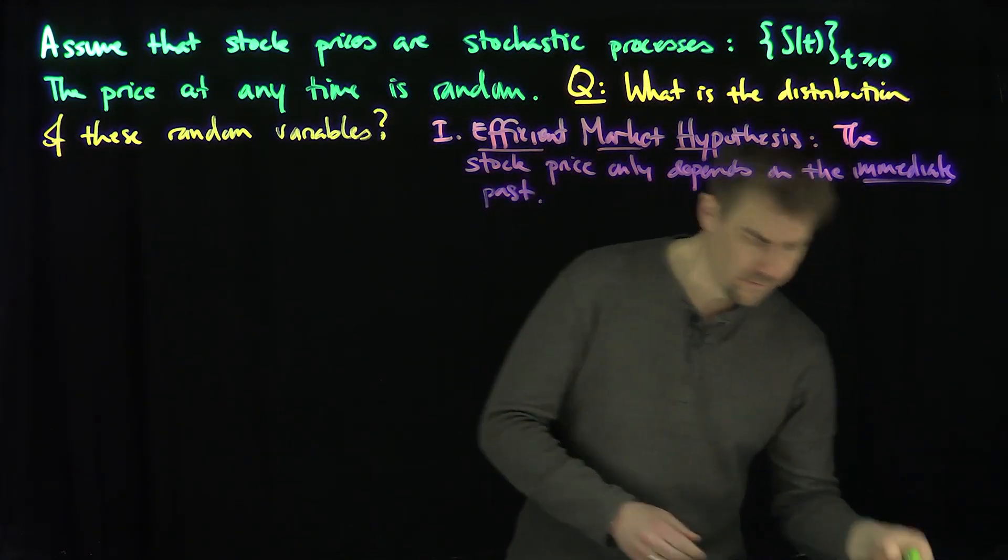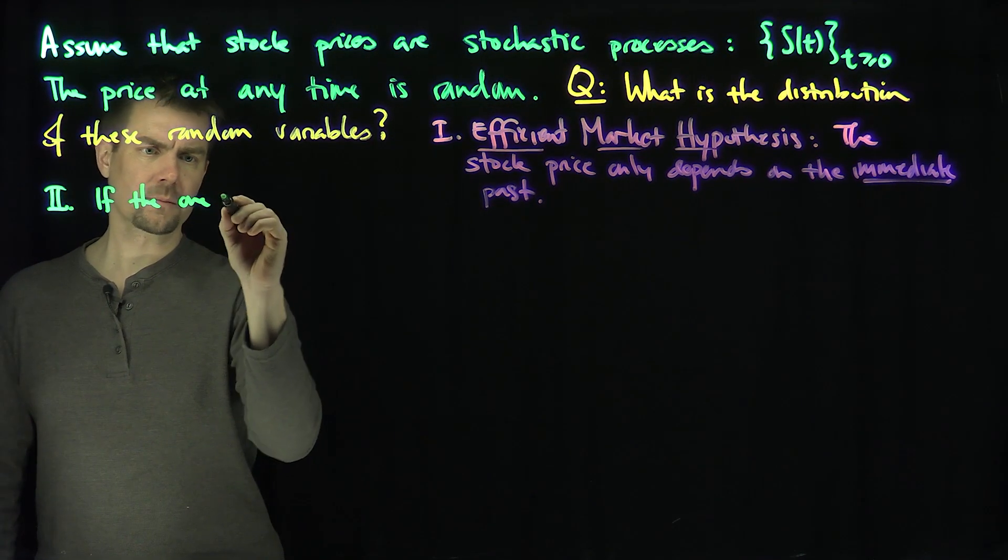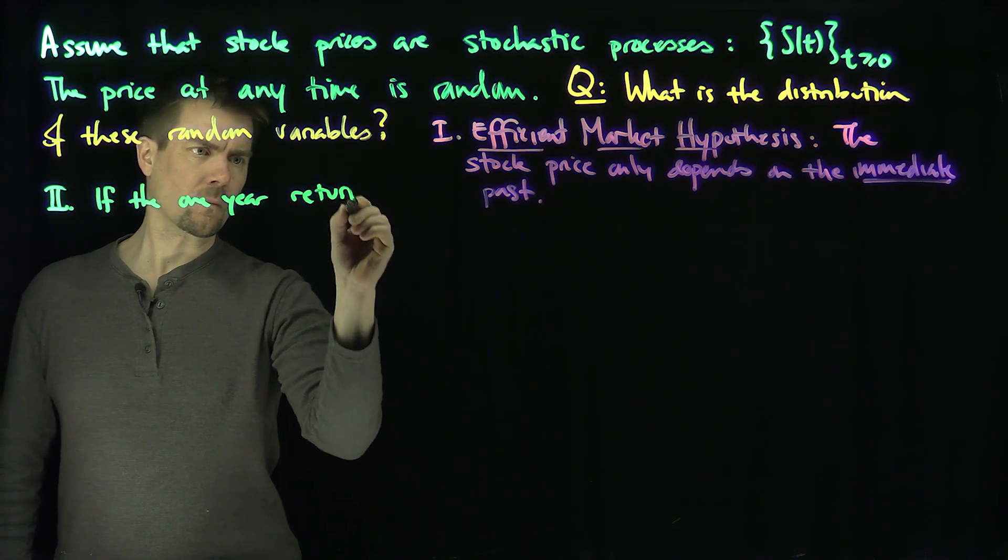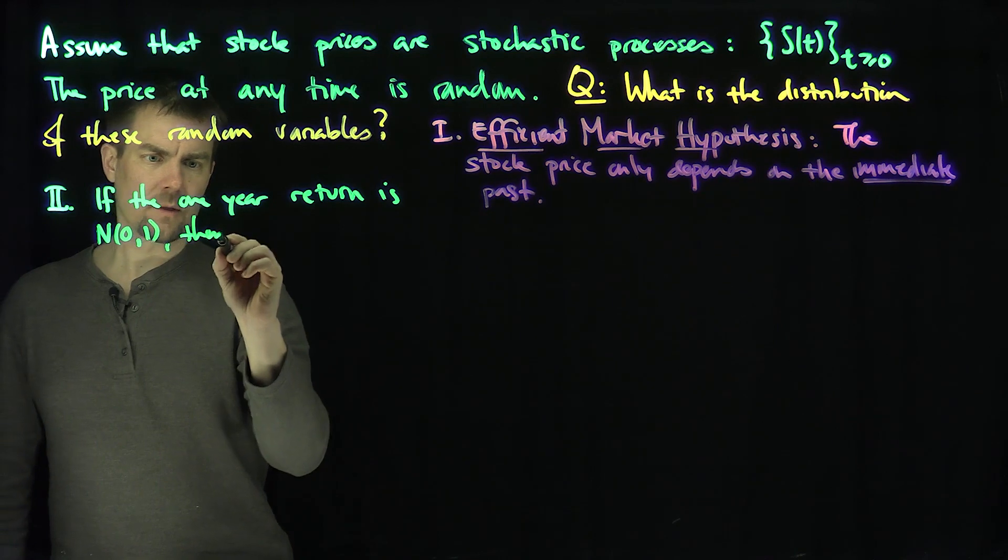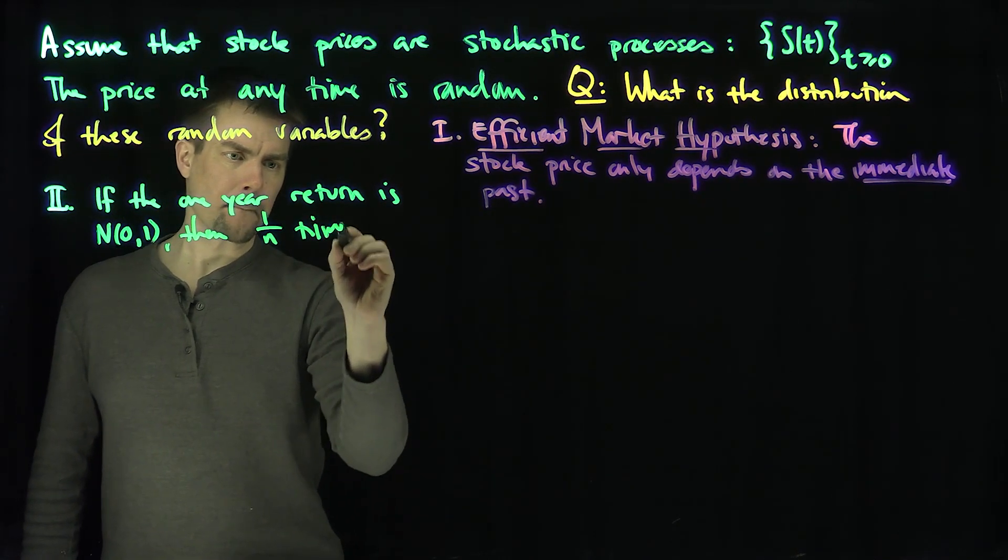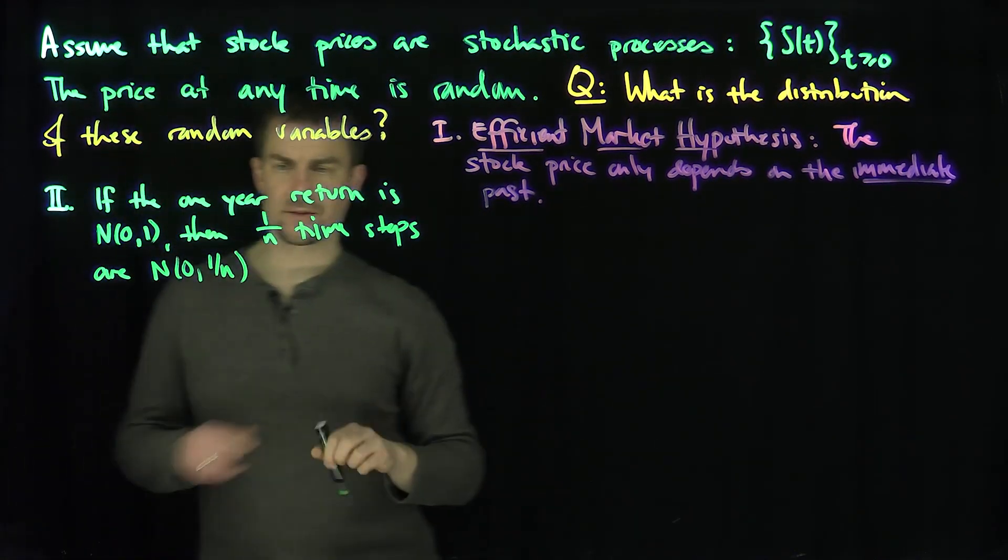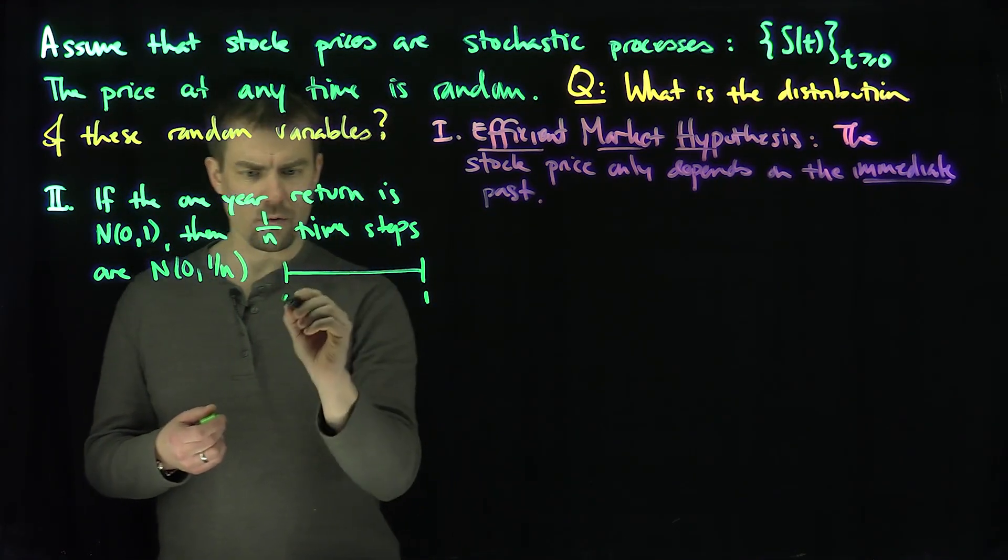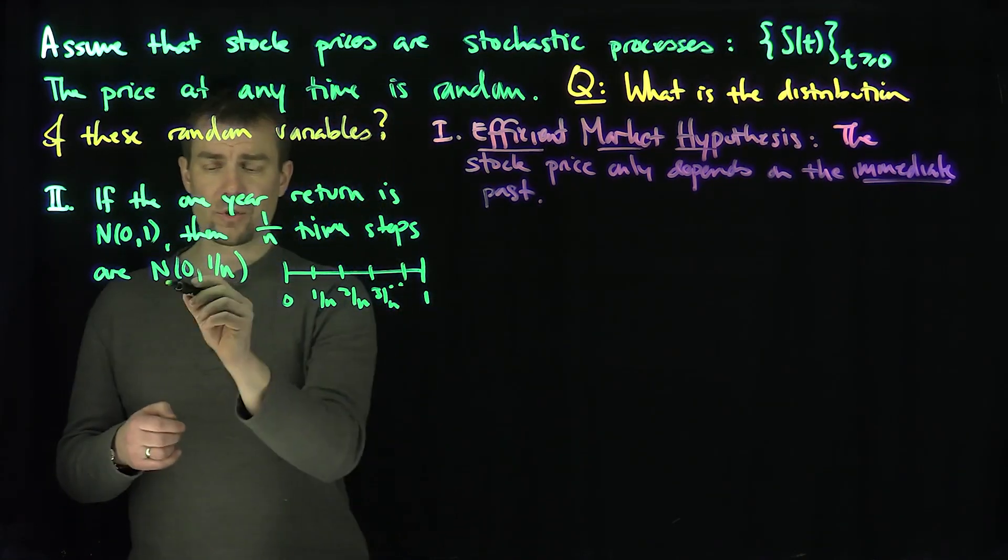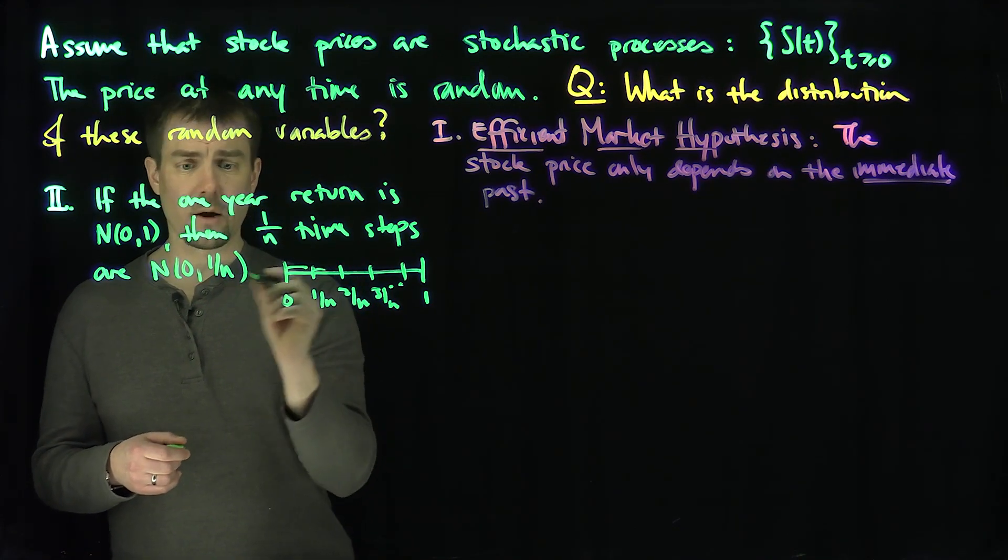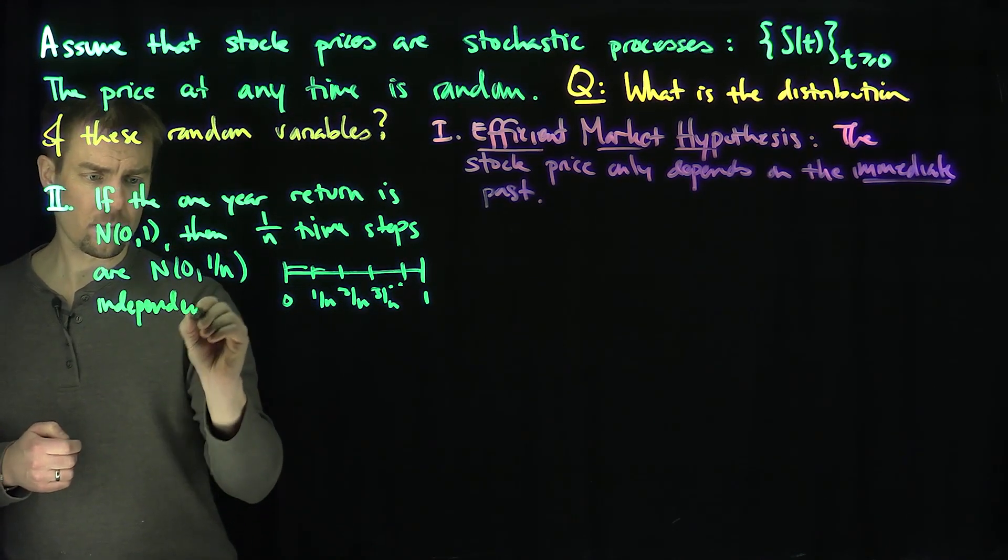The other hypothesis is that if the one-year return is normal(0,1), and this hypothesis is true, then over any time step, then 1 over n time steps are normal(0, 1/n). Because the variances are just going to add up. So if I break up the year into n equal pieces, all of those pieces have to have the same distribution, normal(0,1/n), and they have to be independent of each other.